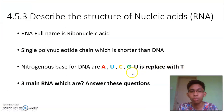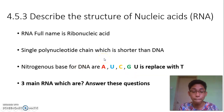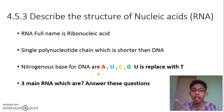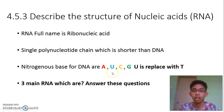For nitrogenous bases in RNA: T is replaced with U. So for RNA the bases are A, U, C, G. When we transcribe from DNA to make RNA, the T in DNA is replaced by U in RNA.